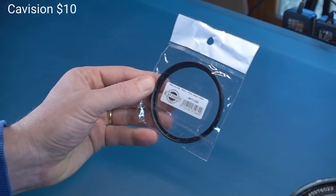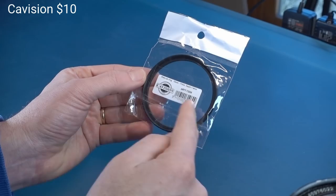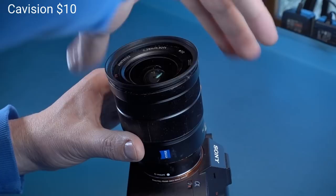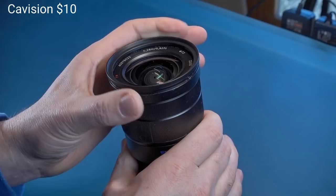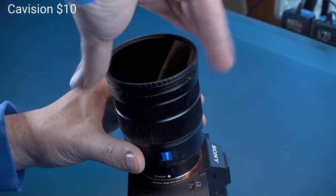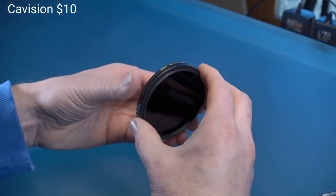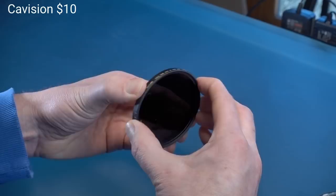Next up is KaVision or CAVision - I don't know how to pronounce it. It's aluminum. This one does not have any ribs on the side. This one comes in at $10. Let's go ahead and try to take it off. You can see the whole thing came off. And then getting them apart - there's no ribs on this thing, so it's making it a little bit tougher. But it wasn't too bad. Not as bad as the B+W.